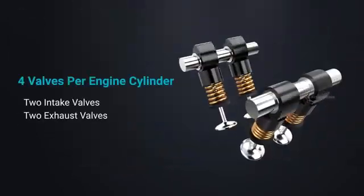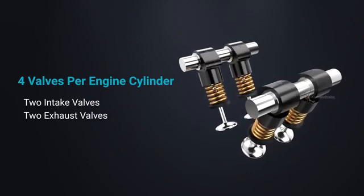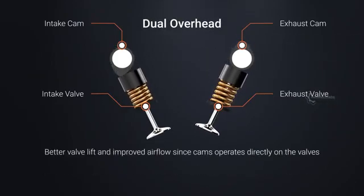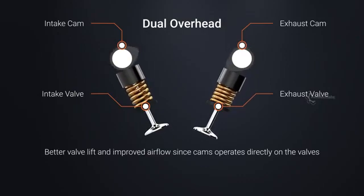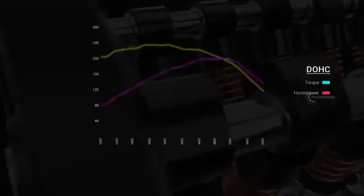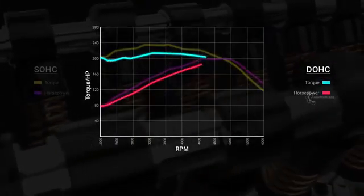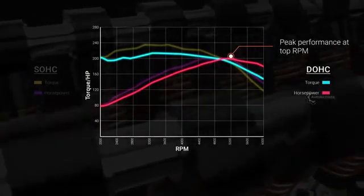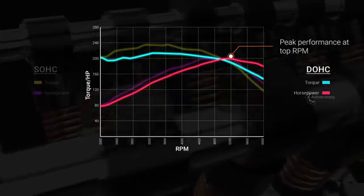DOHC usually implements a four valve per cylinder configuration — two valves for intake and two for exhaust. This configuration has better valve lift, resulting in improved airflow through the combustion chamber. With less airflow restriction, DOHC is even capable of generating more horsepower out of smaller displacement. Though this configuration can provide better top-end power, the design complexity and increased components result in more weight and a higher cost of production.